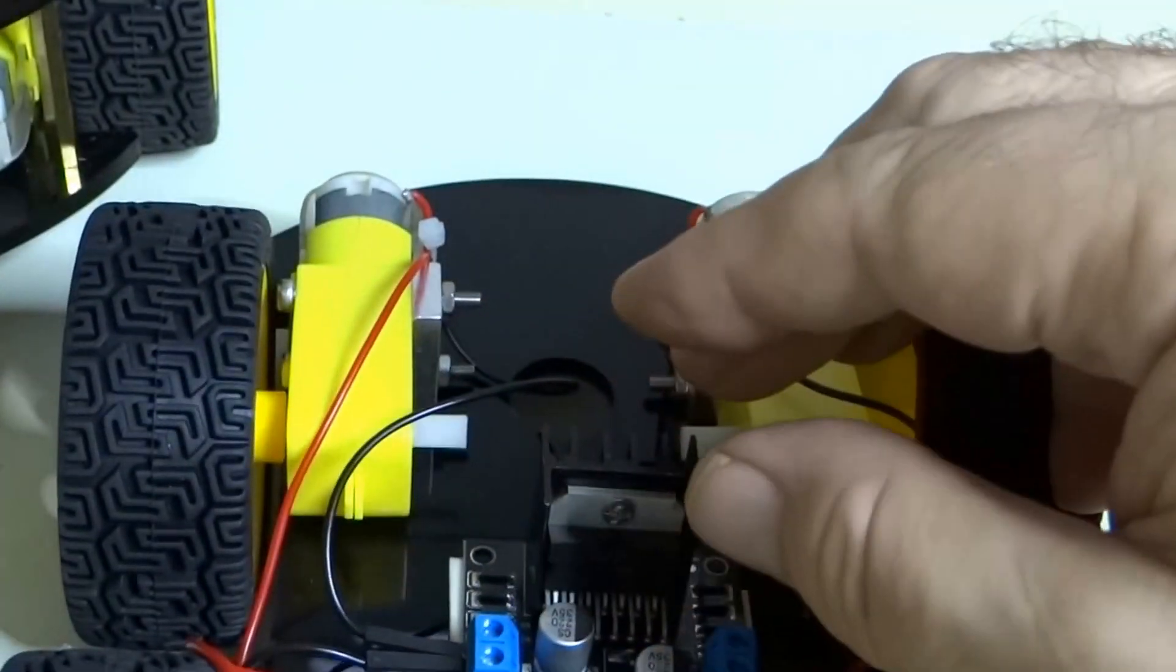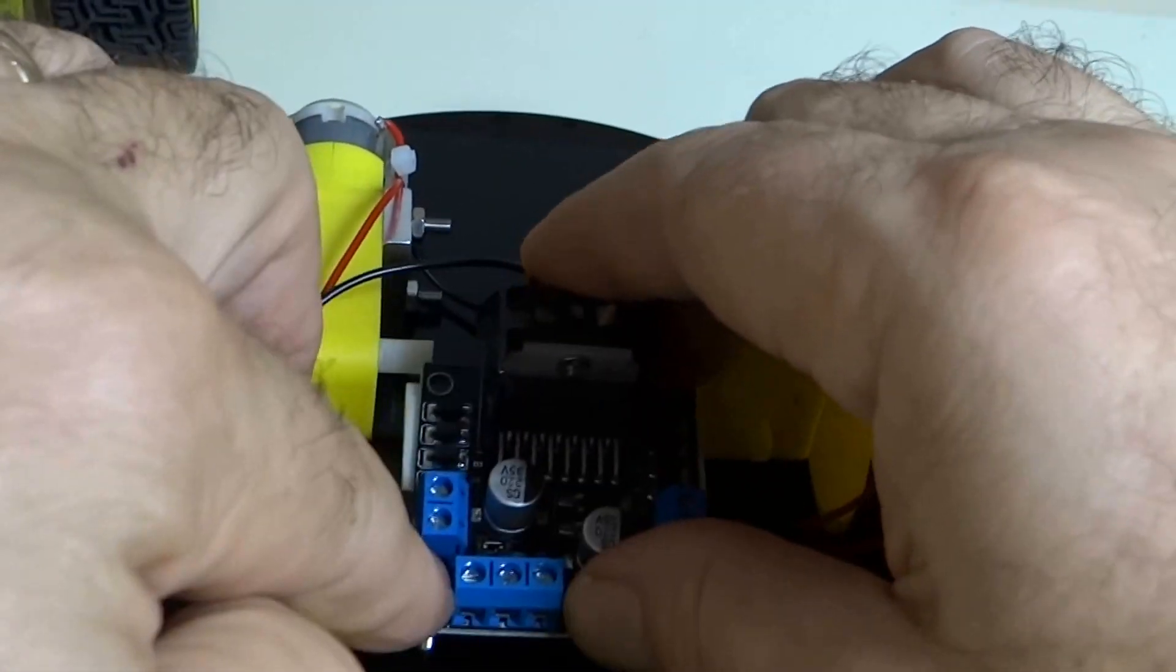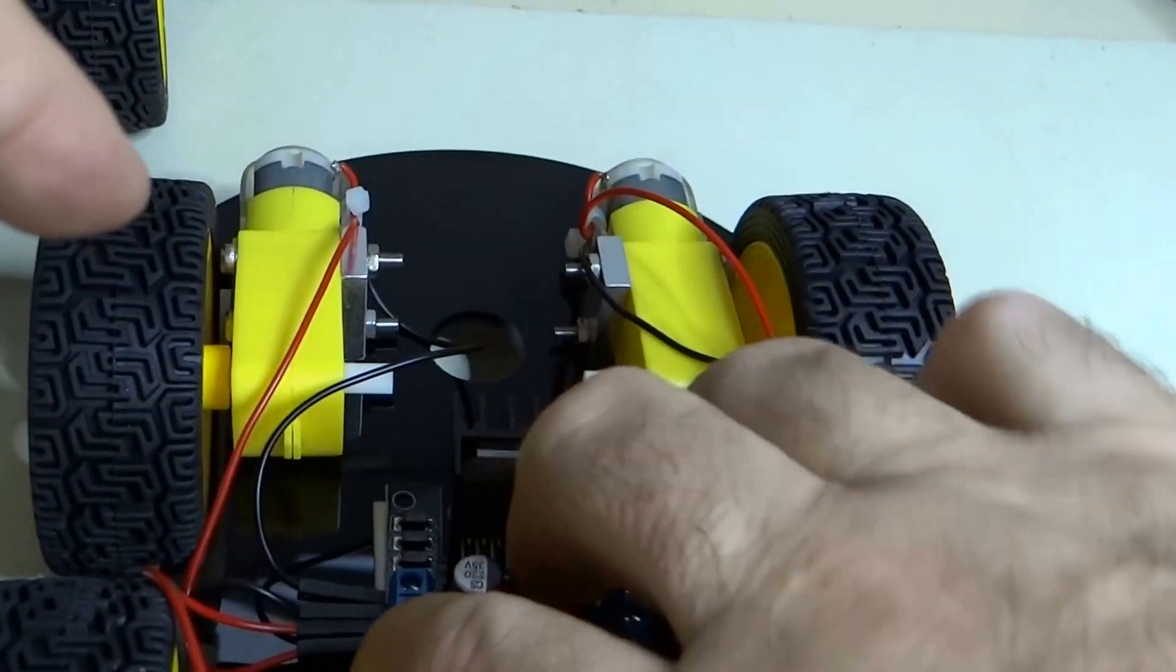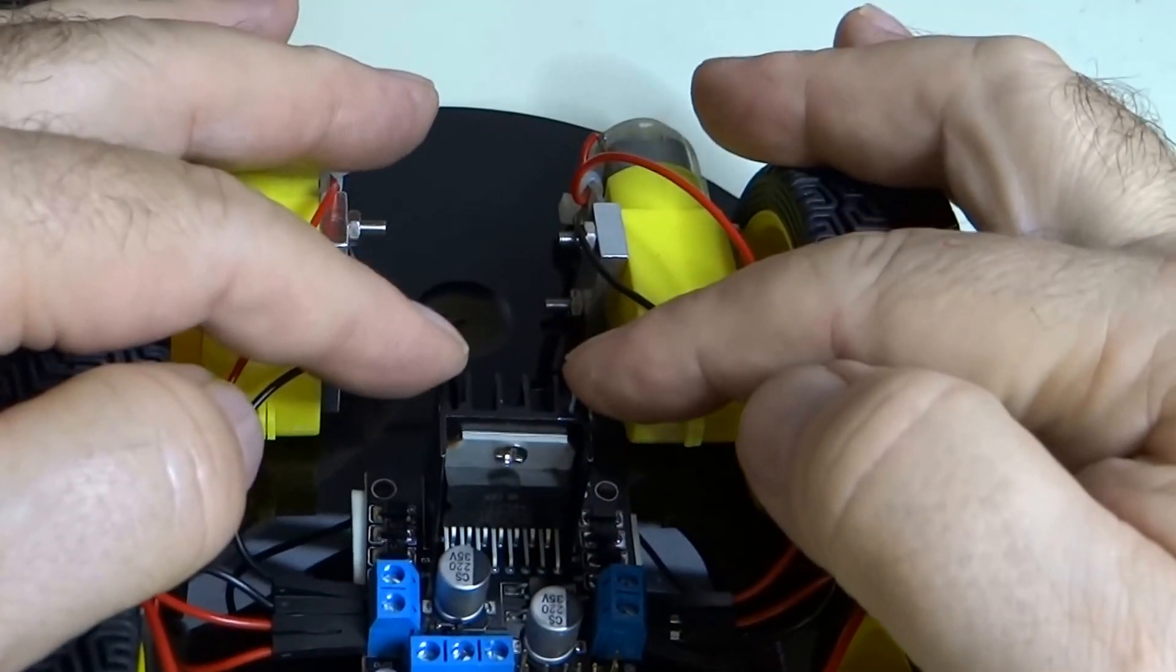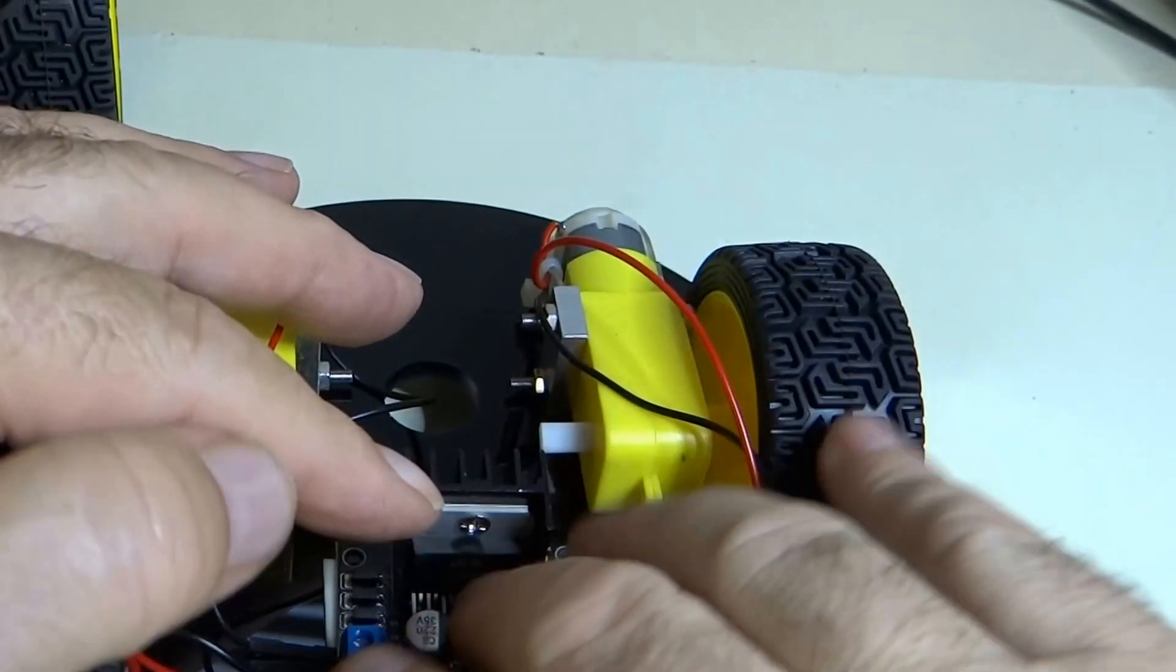Alright, now we can mount this. Basically you just take your four screws like this, put them in the holes here, if you can find the hole. Make sure the heat sink is towards the back of the car.